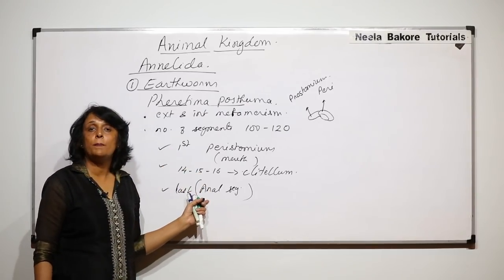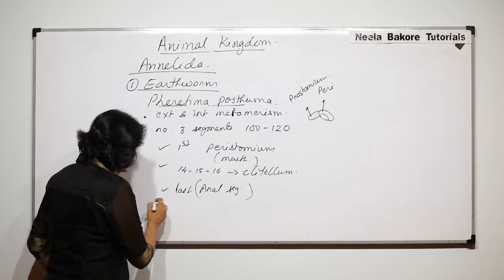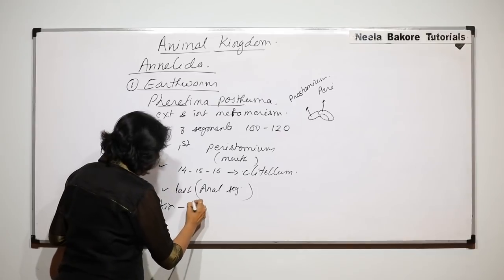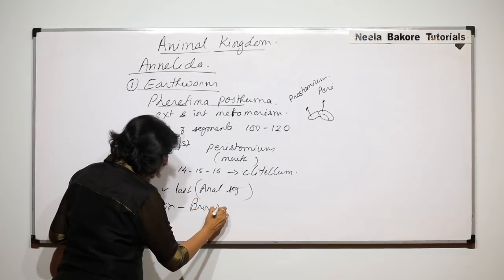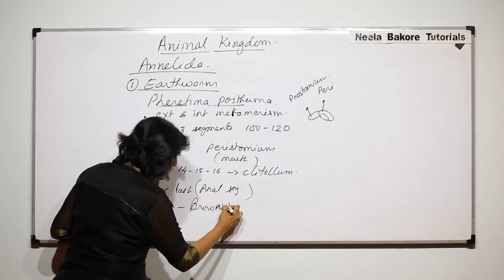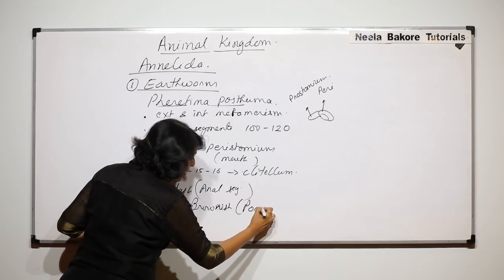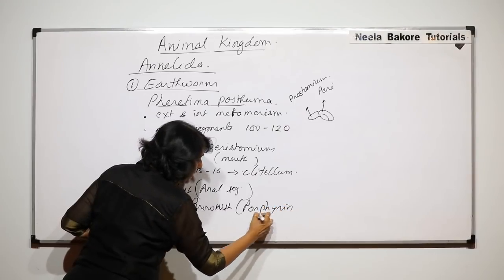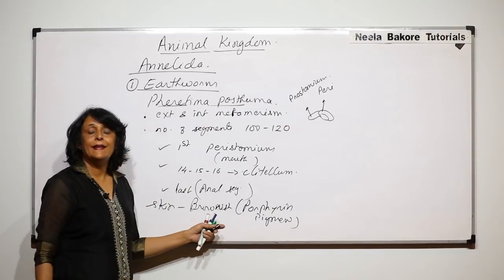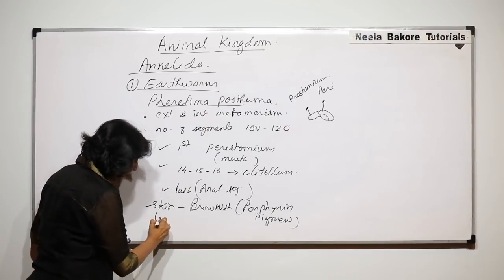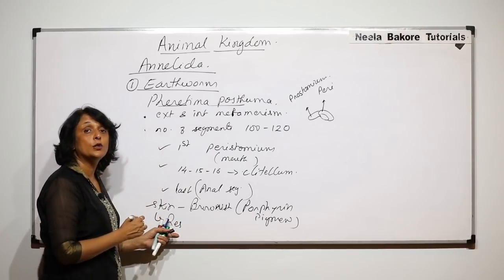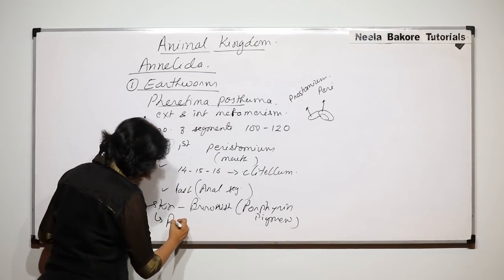These are the important parts visible from the outside. The skin is brownish in color, and it is brownish due to the porphyrin pigment, which gives it that color.